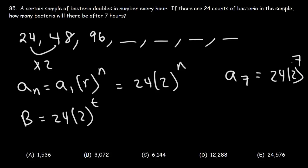So basically we'll need to multiply 24 by 2 seven times. 24 times 2 to the seventh is going to be 3,072. So that's going to be the number of bacteria in this problem. Answer choice B is the correct answer.